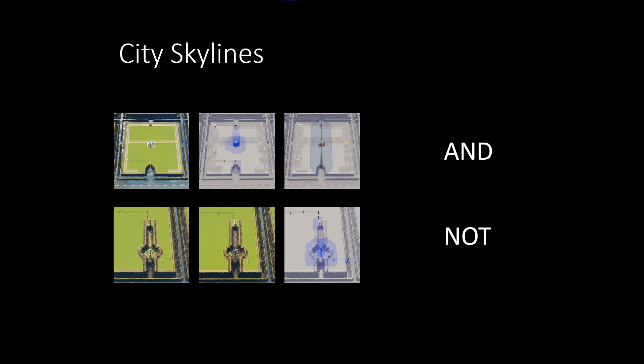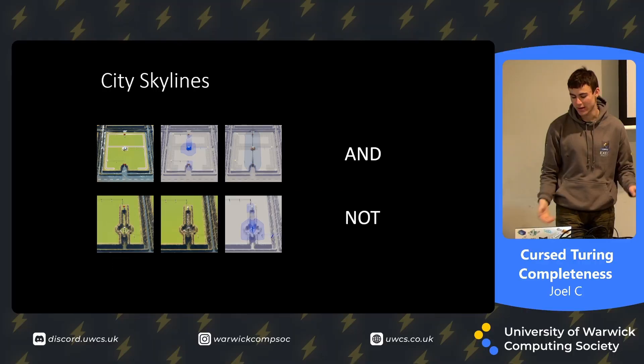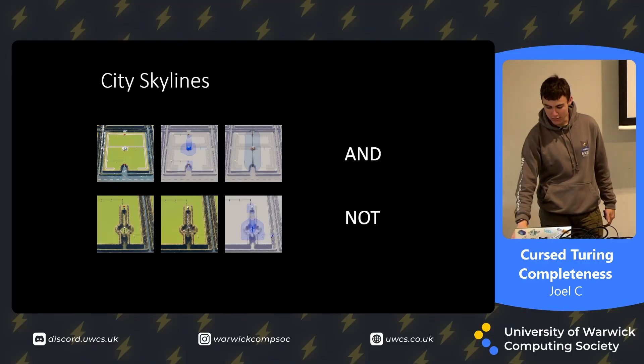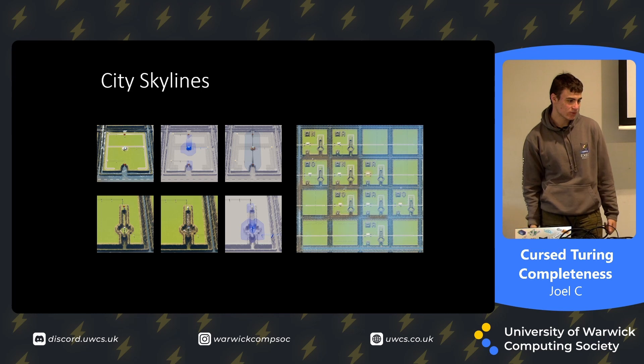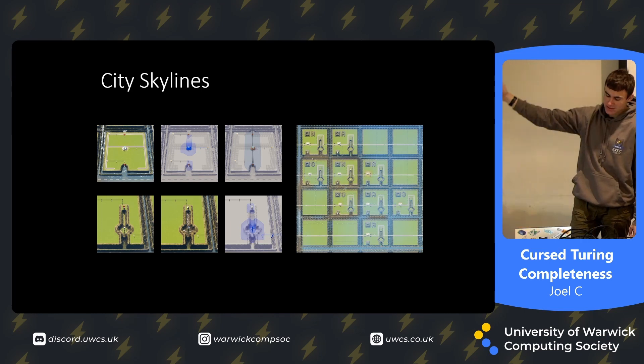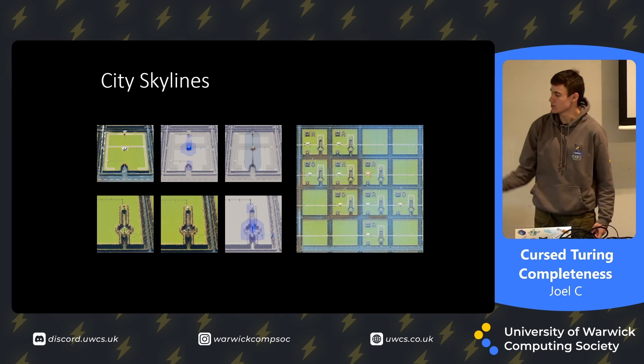You can also make a NOT gate by flooding a power station. It will produce power if there's no power going into the pump — because then it's not flooded — but if it is flooded, it will not output. So we have a NOT gate, which combined with NAND gives Turing completeness. People have made things like a 4-bit adder in Cities Skylines, which is kind of cool.